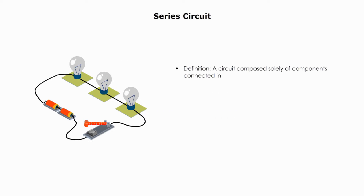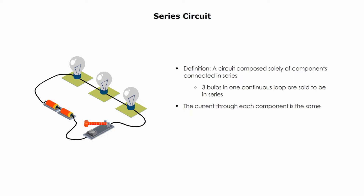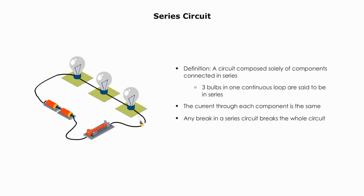A serial circuit is a circuit composed solely of components connected in series. For example, three light bulbs in one continuous loop are said to be in series. In a series circuit, the current through each of the components is the same, and any break in the series circuit breaks the whole circuit.